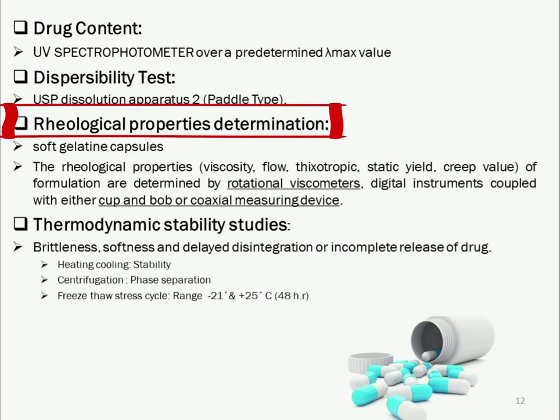Next is the rheological properties determination. SMEDDS can also be administered in soft gelatin capsules, where appreciable flow property is required for processing. Rheological properties like viscosity, flow, thixotropy, static yield, and creep value are determined by a rotational viscometer and digital instrument coupled with either cup-and-bob or coaxial measuring devices. Viscosity determination also indicates whether the system is O/W or W/O — low viscosity systems are O/W (water-based) and high viscosity systems are W/O (oil-based). Viscosity of the formulation is inversely proportional to dilution.